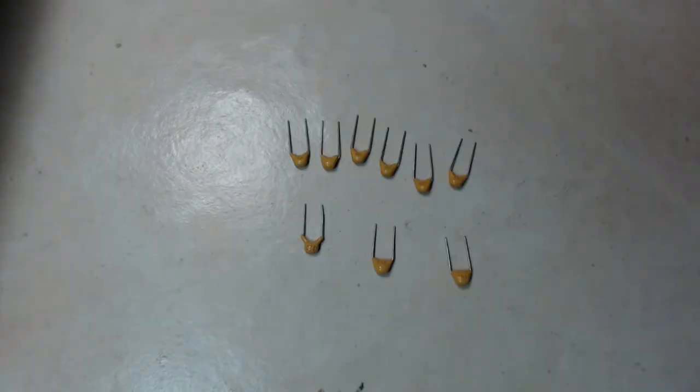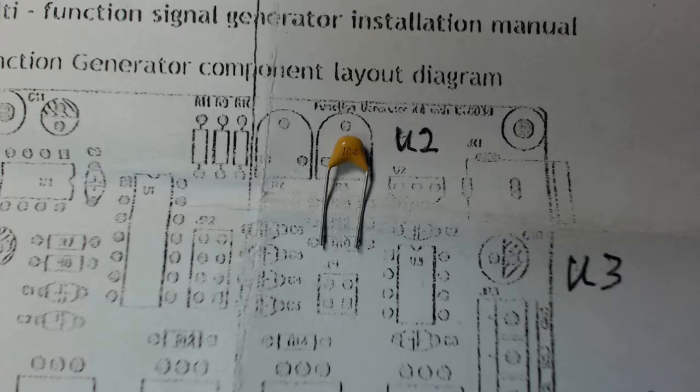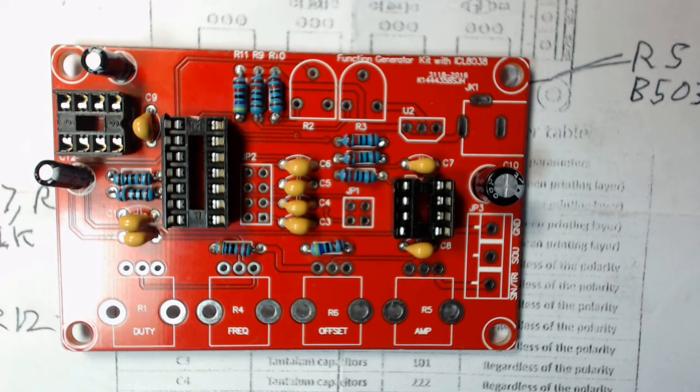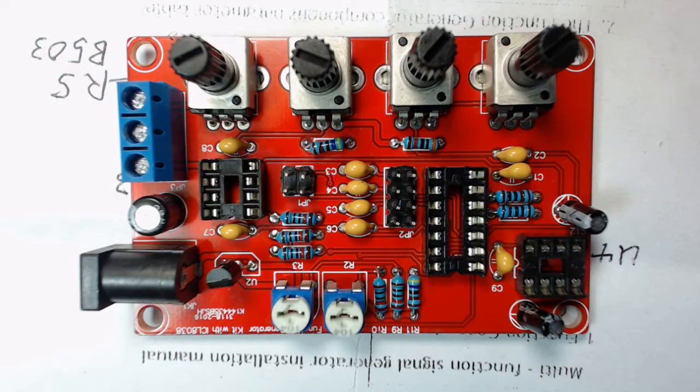There are four different values of tantalum capacitors used in the little kit, and they're all marked. There's a little number on the side of them. Here's a little quick shot with all the sockets, resistors, and capacitors soldered on the board. And here's a shot of the finished unit without the case or the ICs being present.